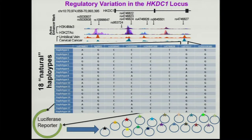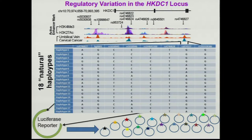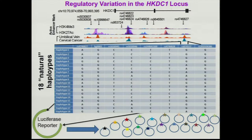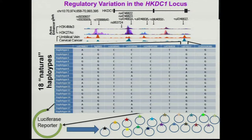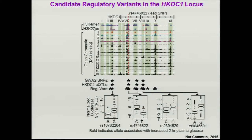A graduate student in Tim's lab, Carl Guo, divided this gene up into about 11 different regions based on the DNase-1 hypersensitivity sites characterized by ENCODE, then synthesized DNA fragments containing all the different haplotypes represented in each of those regions based upon 1,000 Genomes data. Those were put into luciferase reporter vectors and transfected into cells to see which impacted gene expression.